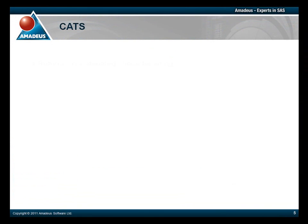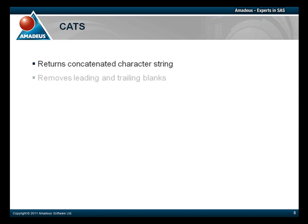The third function that we're going to look at is the CATS function. The CATS function is used when the user wants to concatenate more than one string together, whilst removing leading and trailing blanks in each string. The syntax for the CATS function is similar to the CAT function — the only change is the function name.